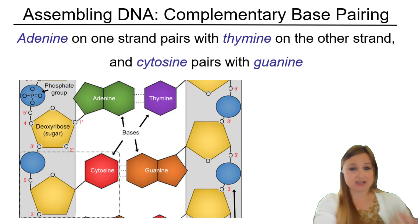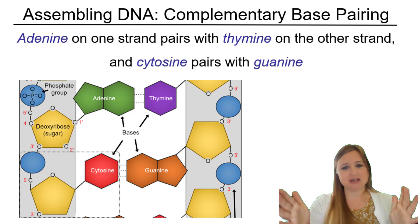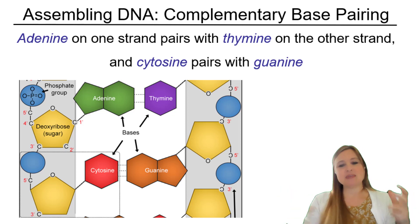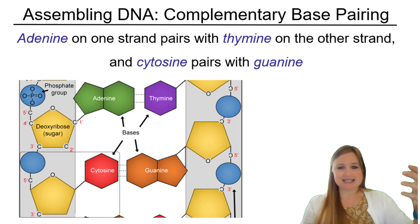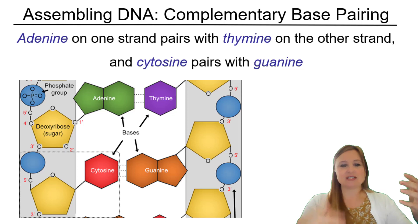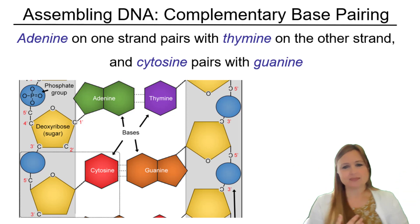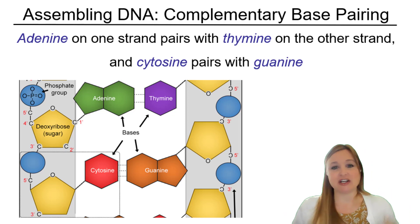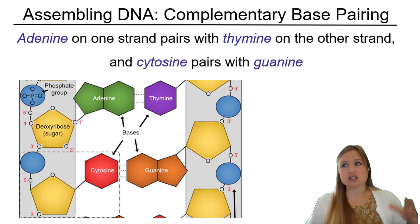Adenine on one strand of DNA is always going to pair with thymine on the other strand, and the same is true for cytosine on one strand and guanine on the other strand. We call this complementary base pairing.